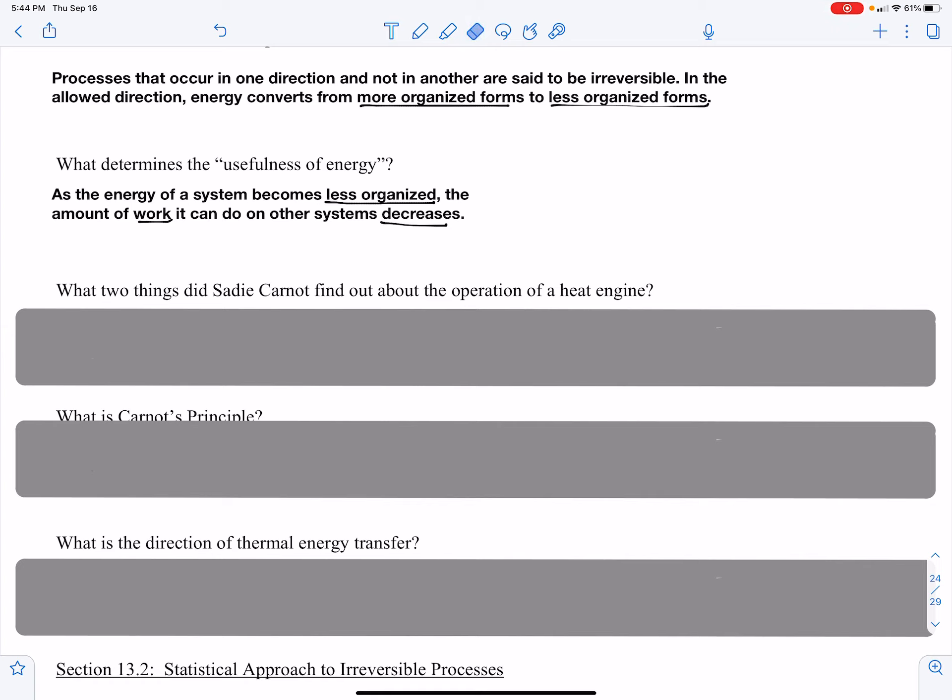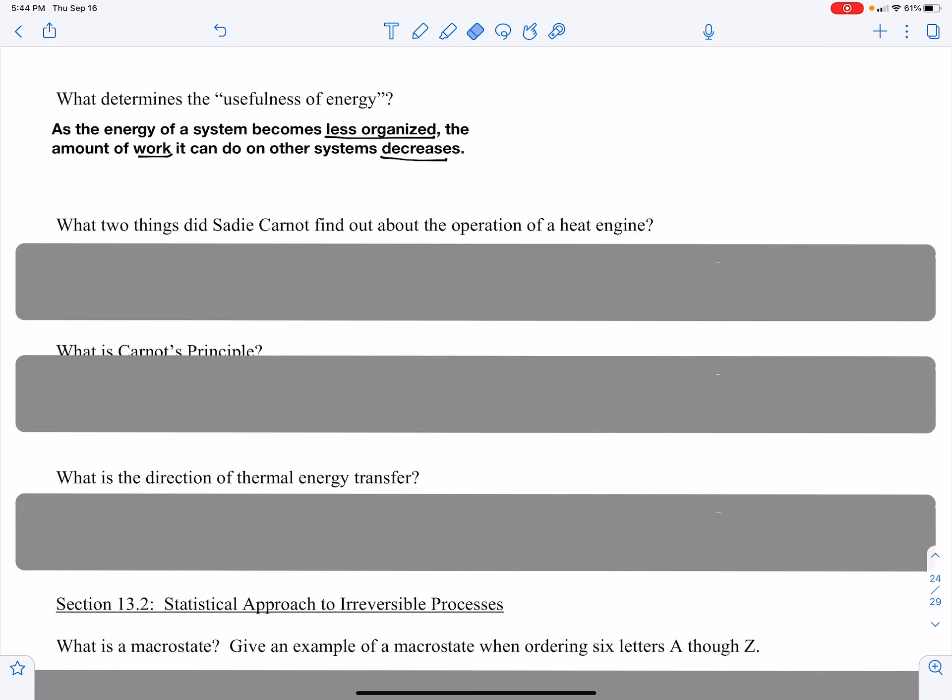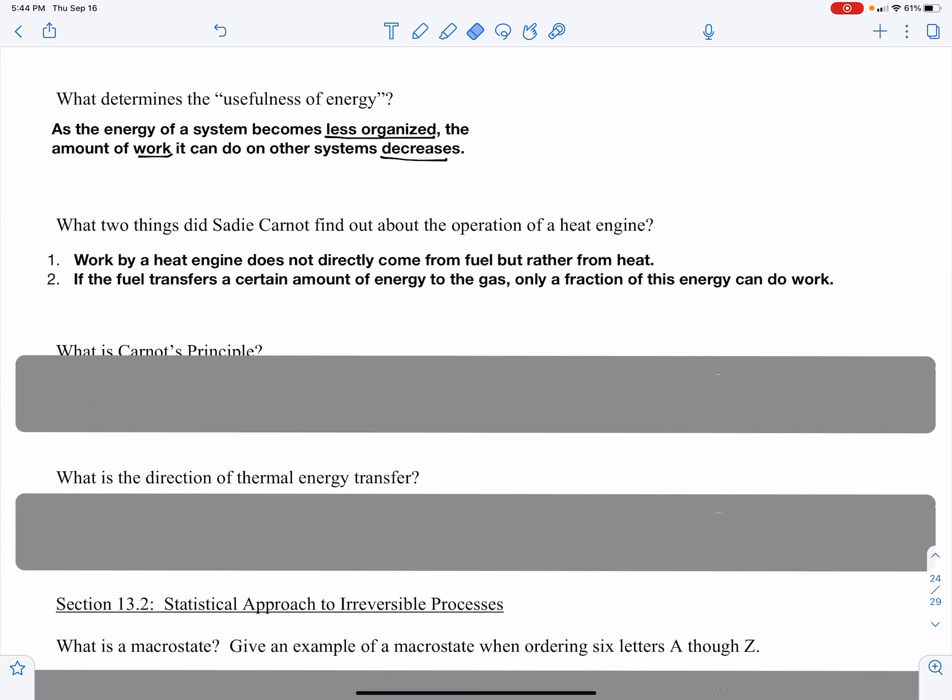What two things did Sadie Carnot find out about the operations of heat engines? A heat engine, also known as a thermodynamic engine. Well, one, he found out that work by a heat engine does not directly come from fuel, but it does come from the heat that comes from the fuel.